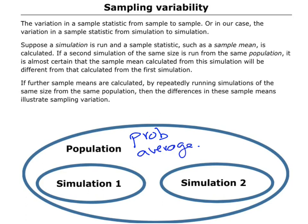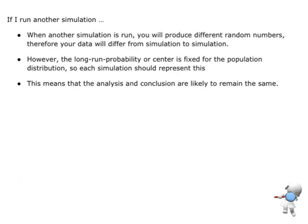Every time we do another simulation, we're getting another set of random numbers, a new set of outcomes. So the key idea is when you do another simulation, you are going to get different random numbers, and that means our data is going to differ from one simulation to the next.